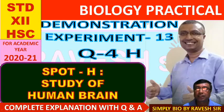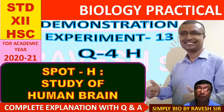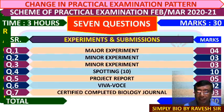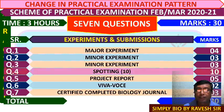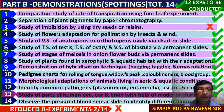Hello friends, welcome back to my channel. Today we're going to continue the biological practical for the demonstration experiment 13, which will be coming as a spotting question. We're going to study the human brain. So let's start. You can see the practical examination pattern for this year, and we're going to continue the spotting experiment number 13 - study of different parts of human eye, ear, and brain with a model or chart.